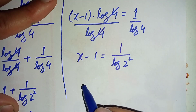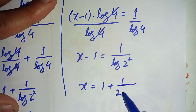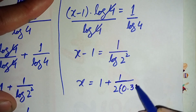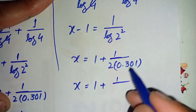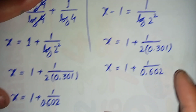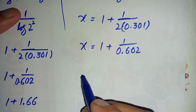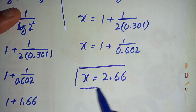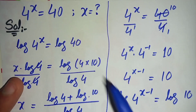After dividing, x − 1 equals 1 over log 4. Taking the − 1 to the right hand side gives x equals 1 plus 1 over 0.602, since 2 times log 2 equals 2 times 0.301 equals 0.602. Simplifying this expression gives x equals 2.66. So x equals 2.66 is our answer for this exponential equation using both methods.